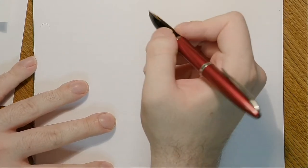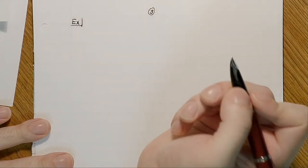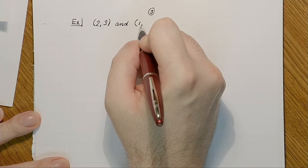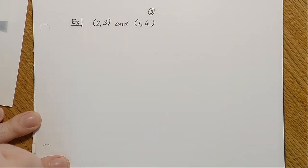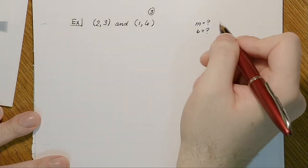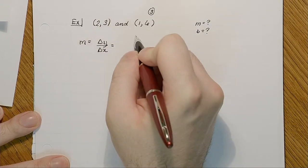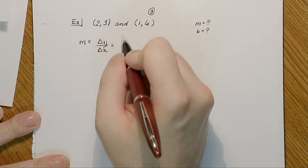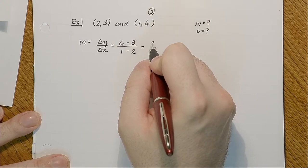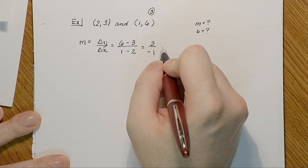My next example uses two points: (2, 3) and (1, 6). I don't know m or b, so first I find the slope: change in y over change in x is (6 − 3) / (1 − 2) = 3 / (−1) = −3.